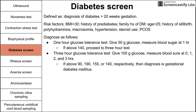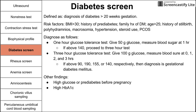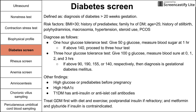Remember that gestational diabetes must be diagnosed after 20 weeks of gestation. Other findings concerning for diabetes in pregnancy include high glucose or prediabetes before pregnancy, high hemoglobin A1c, and type 1 diabetes with anti-insulin or anti-islet cell antibodies. You first want to treat gestational diabetes with diet and exercise; if that doesn't work, you can try postprandial insulin and metformin, or glyburide if insulin is contraindicated.